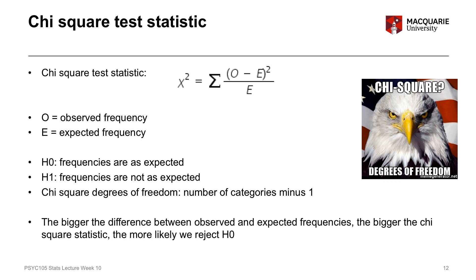Generally speaking, the more difference there is between the observed and the expected frequencies, the bigger our chi-square test statistic will be, and therefore the greater the chance that we will reject the null hypothesis. The bigger the difference in our data, the bigger the chi-square statistic becomes, and the more likely we are to reject the null.